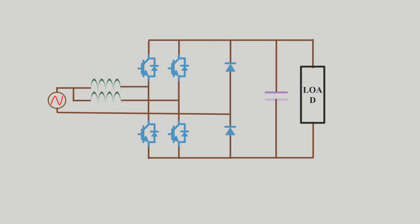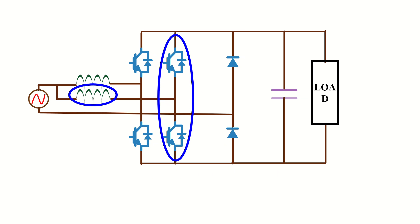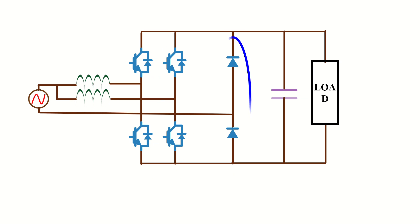This represents the fundamental topology of an interleaved totem pole PFC converter. Like any other interleaved topology, an additional inductor and MOSFET leg are incorporated into the circuit, and diodes are employed in the low-frequency leg.